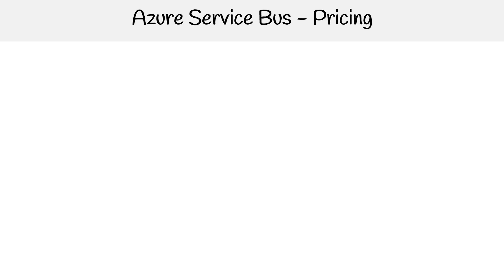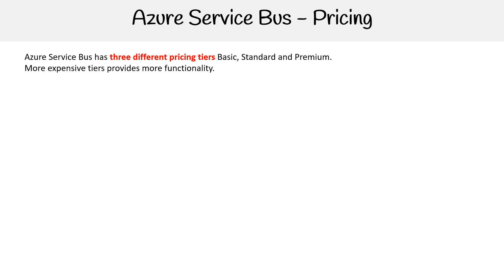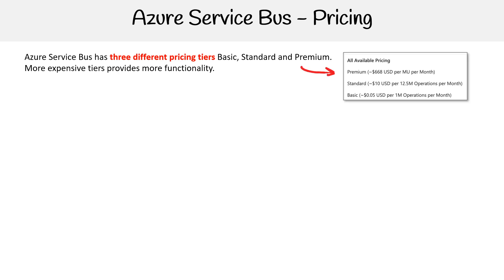Let us explore the pricing for Azure Service Bus. They have three different pricing tiers: basic, standard, and premium. The more expensive tiers provide more functionality, which I would hope is always the case for most services. On the right hand side, we have our available pricing, and you can see it's based on metrics like millions of operations per month.